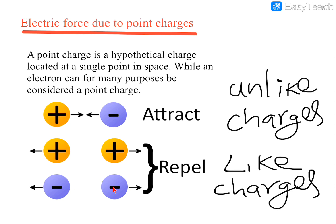The same applies for negative charges. Here two negative charges are present, so there will be repulsive force between them. Since it is repulsive, each charge will move away, as shown by the arrows pointing outward. Whenever there are like charges — meaning the same type of charges — there will be a repulsive force. So electric force can be attractive as well as repulsive, depending upon the type of charges. If unlike charges, it is attractive; if like charges, it is repulsive.